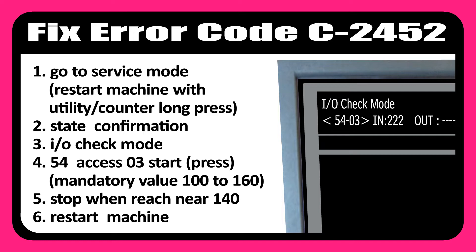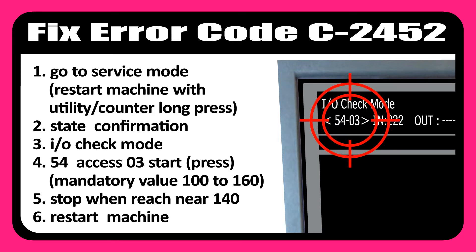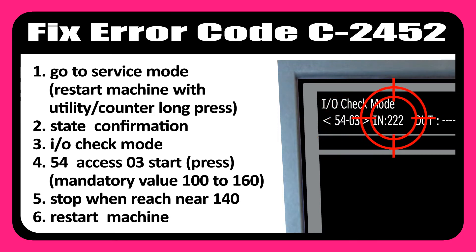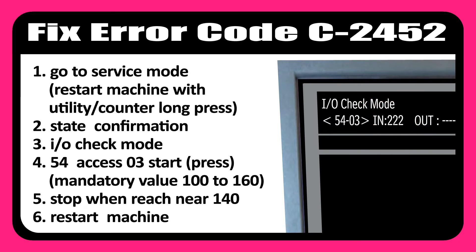Simply start the machine with long press utility/counter, then select state confirmation, then select IO check mode, then press 54 access 03 and press start. Stop when it reaches near 140. The mandatory value is 100 to 160. After reaching the mandatory value, restart the machine.